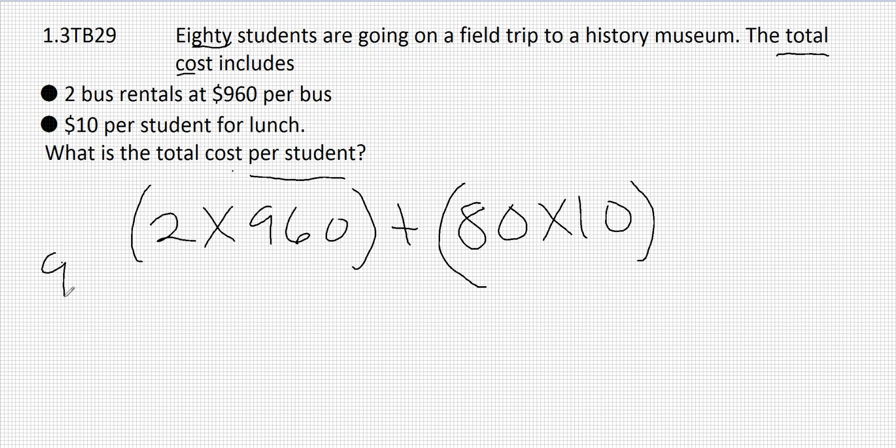So let's go 2 times $960. That would be 0, 12, 18, 19. So $1,920 is what that's going to cost us. The buses are going to cost us $1,920.